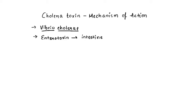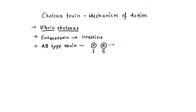Cholera toxin falls under the category of a special kind of toxin produced by bacteria, which is also called the AB type of toxin. These toxins basically have two different subunits: the subunit A and the subunit B. In cholera toxin there are five B subunits and one A subunit, which together make up the complete cholera toxin. The five B subunits help in attachment of the toxin to the cell, and the toxic property is present in the A subunit.